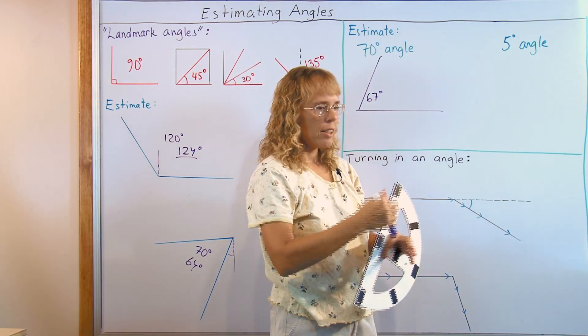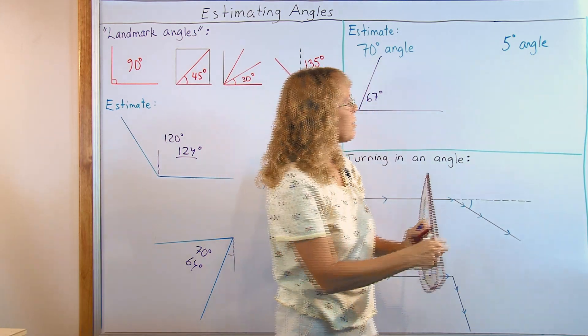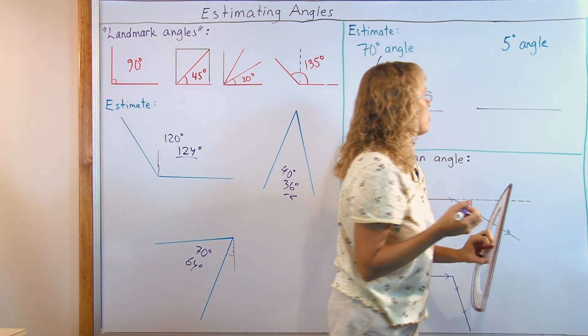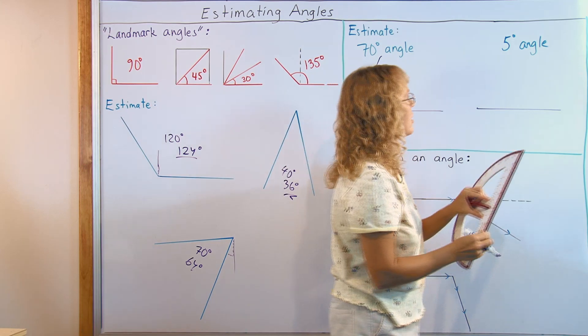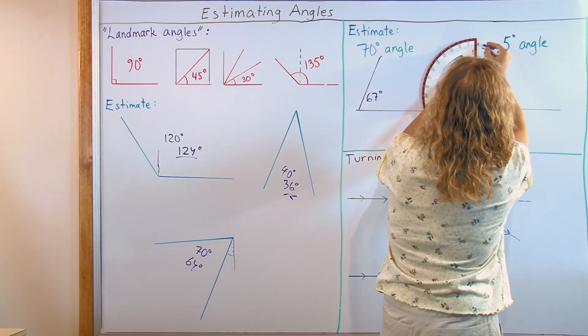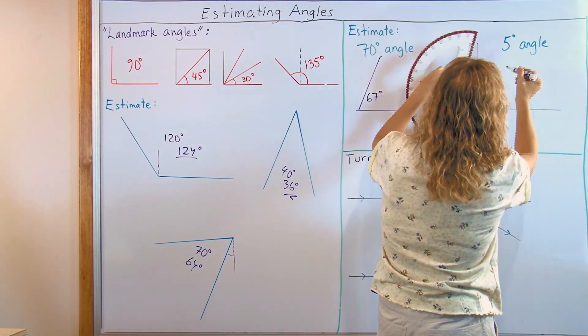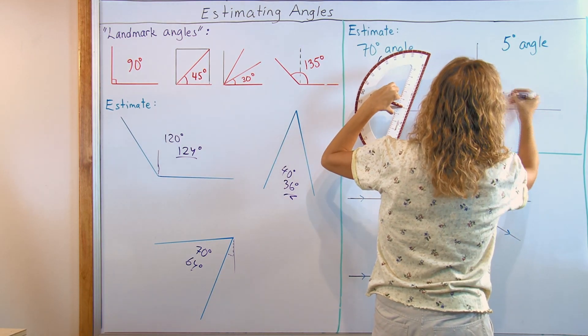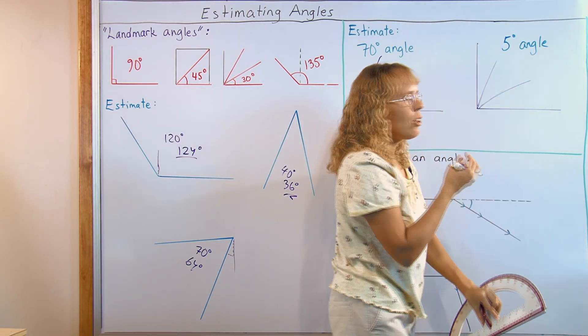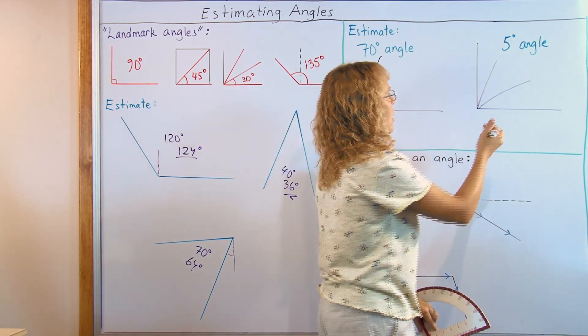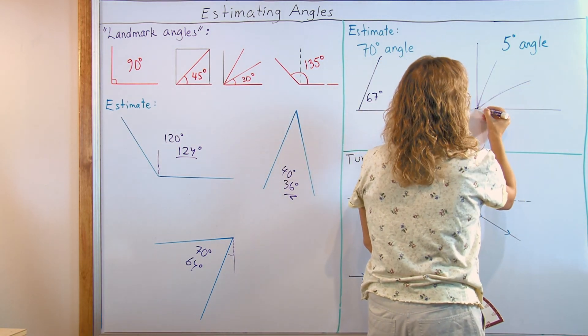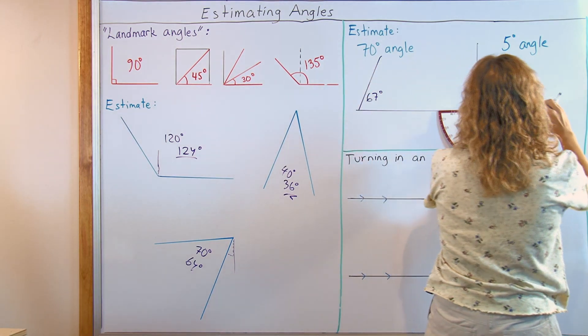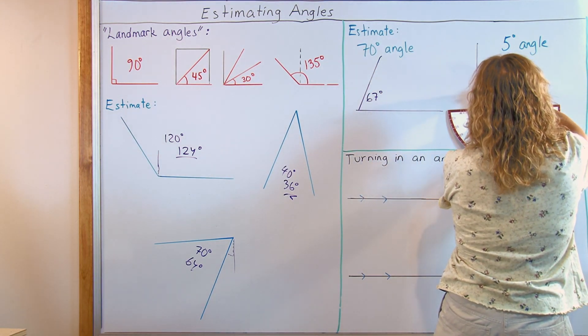Now here with the 5 degree angle, let's see if I can estimate that. And I would use, first of all, my landmark angle of 30 degrees and then go down from there. Let's say here is about 90 and then if I can draw, I don't know, roughly like so for 30 and 30 degree angles. So if this is about my 30, then this would be about my 15 and then that into three parts. So let me guess.